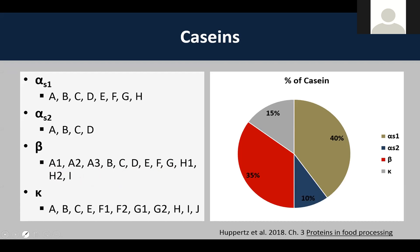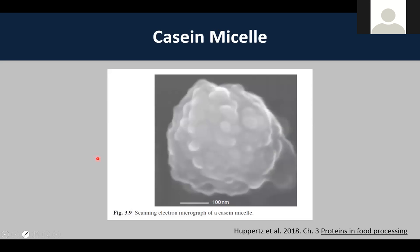The kappa caseins have A and B as the most common variants. The B variant is associated with high cheese yields — that's actually the preferred variant for cheese making. There is also an E variant of kappa casein that is very unfavorable for cheese-making properties, and a couple of popular sires right now happen to carry the E version. The bottom line is there are lots of different caseins and lots of natural variation among them.